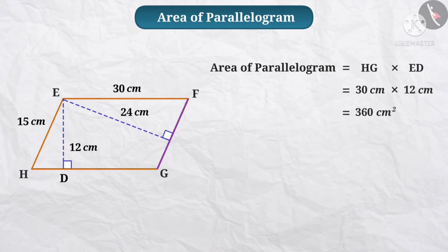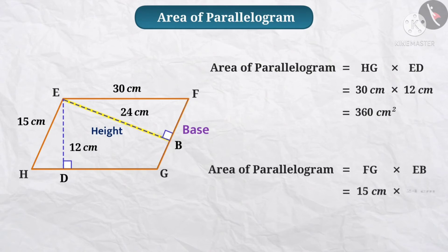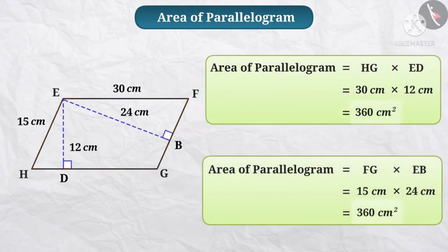Next, you see the same parallelogram. Base is GF, and from one vertex the perpendicular meets the opposite side at B, so height is BE. Area of the parallelogram is equal to FG into EB — base FG, height EB — so 15 into 24 is equal to 360 centimetres squared. This is the area of the parallelogram.